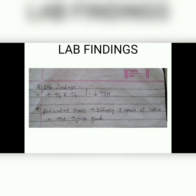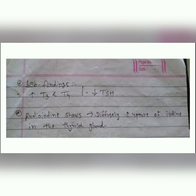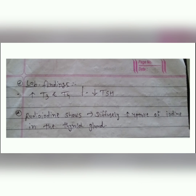In lab findings, there is an increased level of T3 and T4, because the antibodies bind to TSH receptors on the thyroid gland and increase hormone production. You can find elevation of T3/T4 level, and due to the negative feedback mechanism, TSH level will be low in blood. Radioiodine scan shows diffuse uptake of iodine in the thyroid gland.